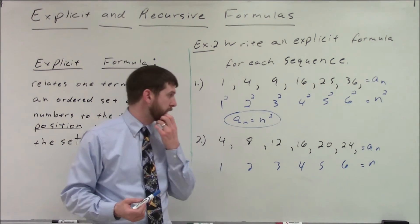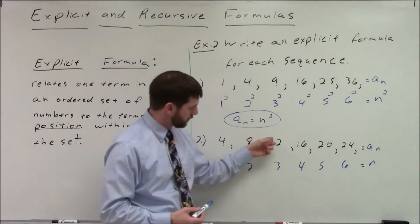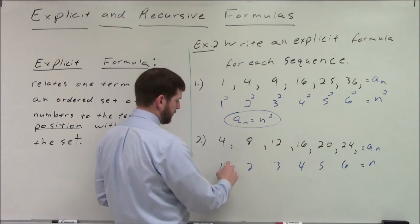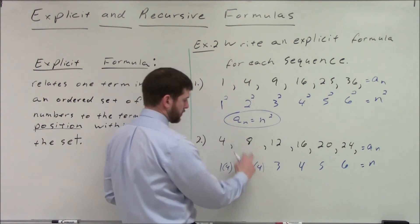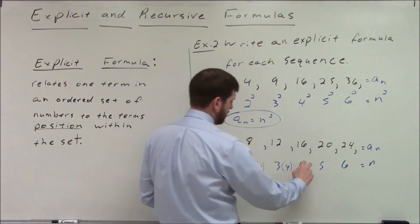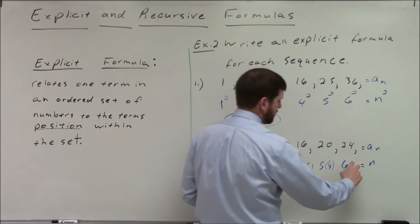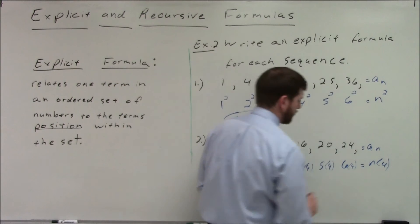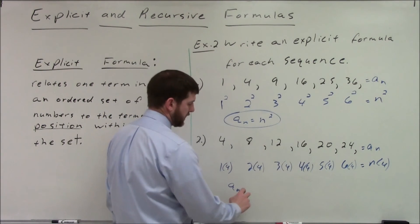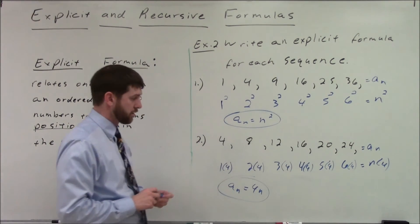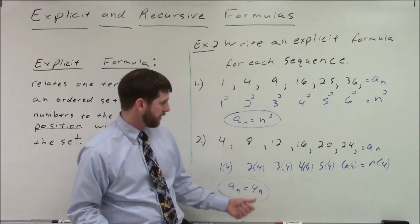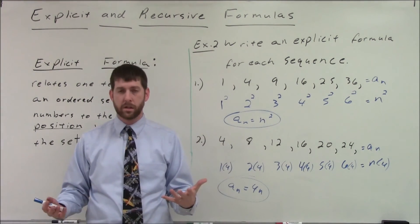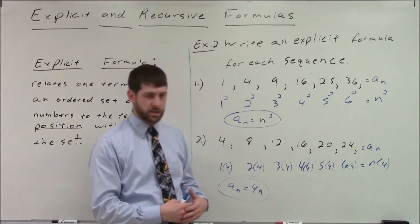Now for the second example: to get from position 1 to 4, 2 to 8, 3 to 12, 4 to 16, 5 to 20 — it looks like we're taking each position and multiplying by 4. So 1 times 4 is 4, 2 times 4 is 8, 3 times 4 is 12, 4 times 4 is 16, 5 times 4 is 20, 6 times 4 is 24. So the explicit formula is a sub n equals 4n. If I wanted the fifth term, 4 times 5 is 20. The second term: 4 times 2 is 8. The thirteenth term: 4 times 13 is 52.